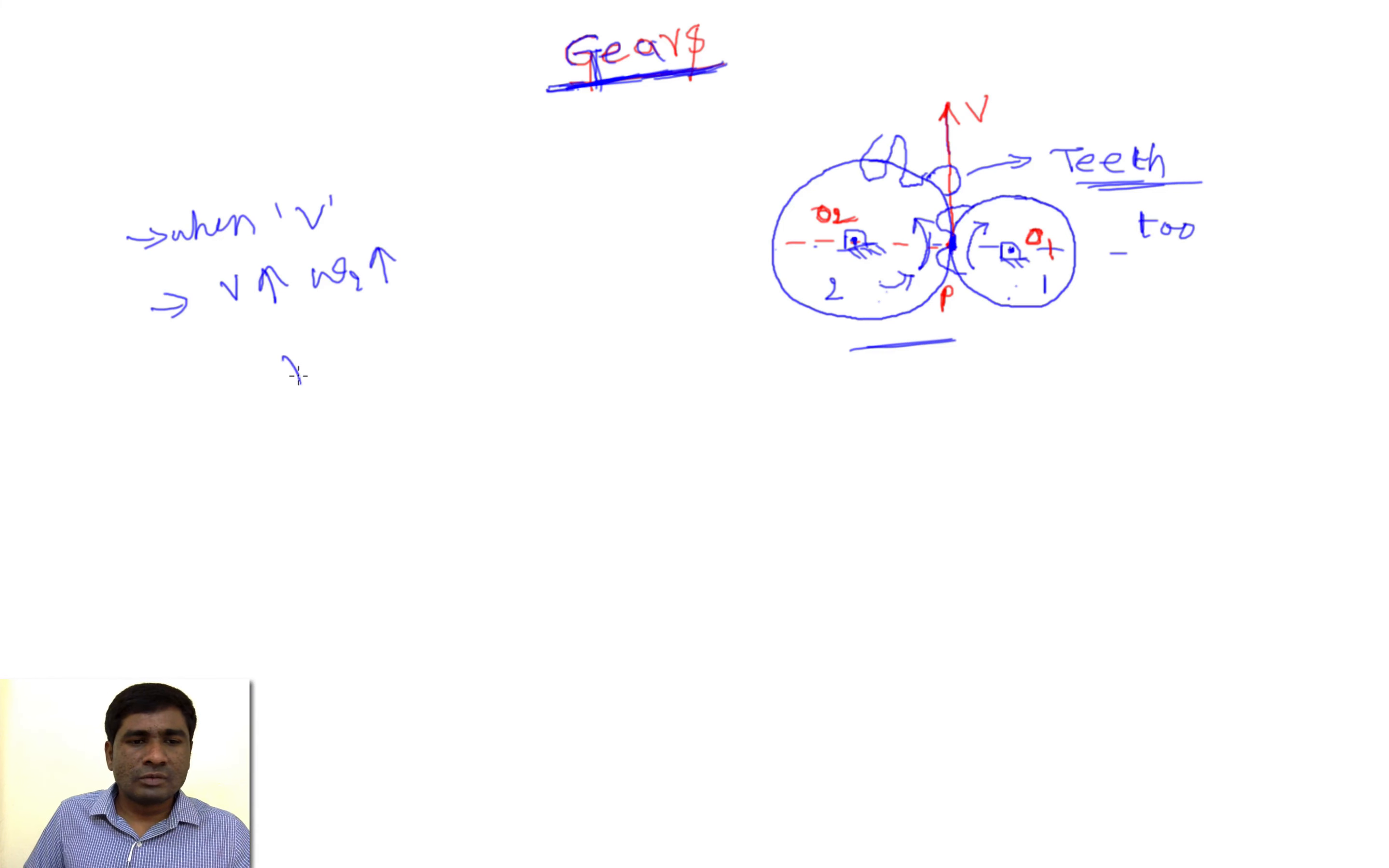But we already know that omega equals 2πn/60 when n is in RPM (revolutions per minute).